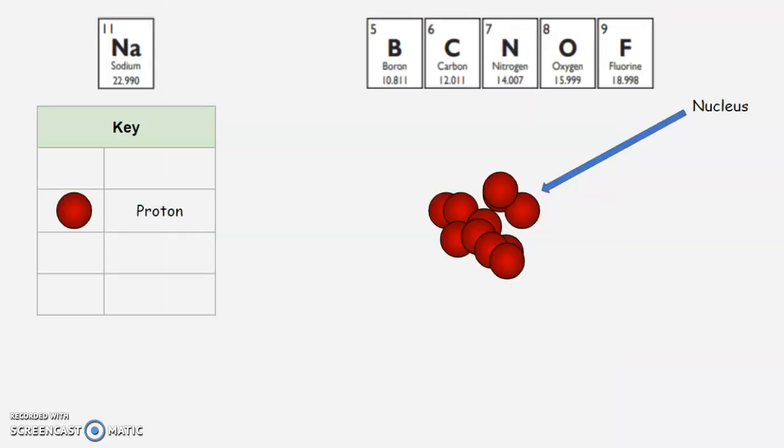Protons are positive, and they're found in the nucleus. So where's the nucleus? It's in the center of the atom. So right in the middle, we have our nucleus, and that's where we find our protons.